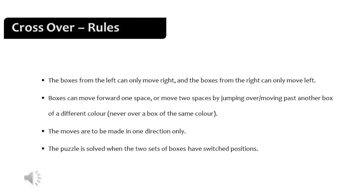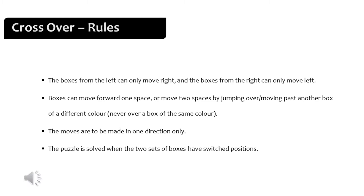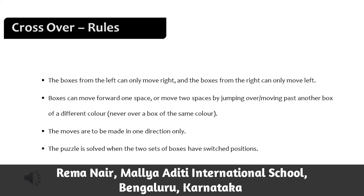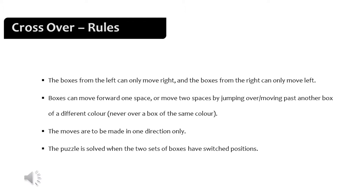The problem has been shown to you and the outcome. Now, what are the rules? The boxes from the left can move only to the right, and similarly the boxes from the right can only move left, which also means that they cannot take steps back. The boxes can move one space forward or they can move two spaces forward by jumping over or moving past another box of the opposite side or one of a different color. The moves are to be made in one direction as mentioned earlier. The puzzle is completed when the two sets of boxes have switched positions.